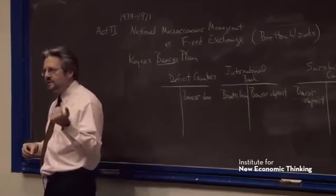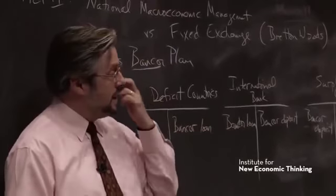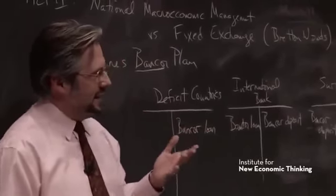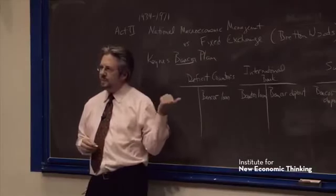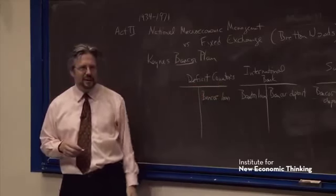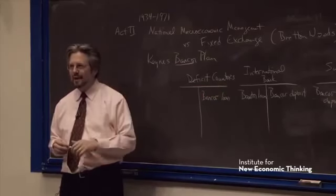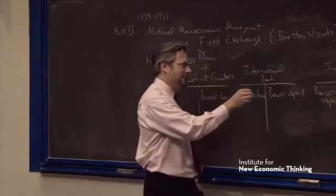So Keynes proposed this, this is a sort of classic banking solution to this kind of problem. But the United States looked at this and they said, let's just ask ourselves which of these people is going to be us. Which of these agents is going to be us, and which is going to be you. And it was pretty clear that this was going to be the UK, and this was going to be the US.